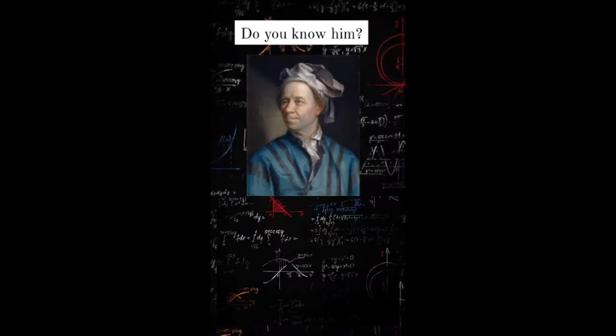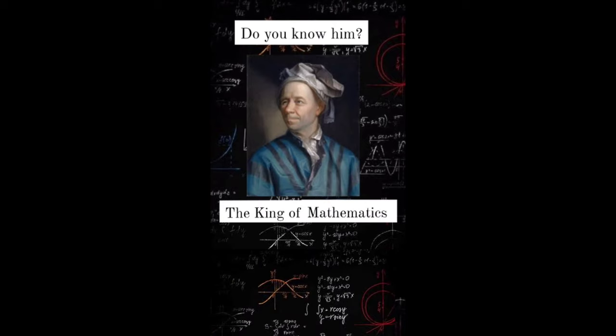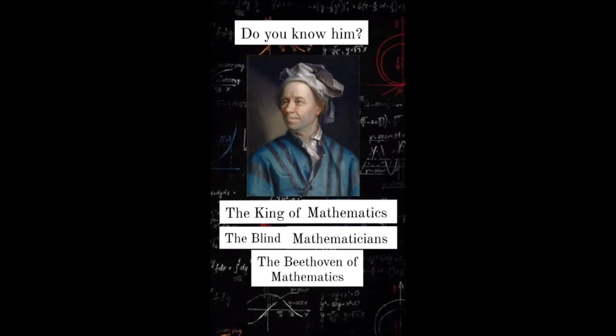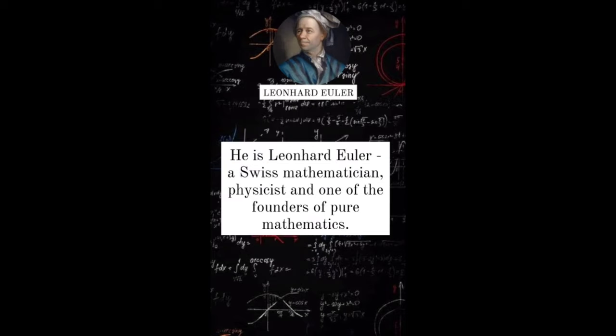Do you know him? He is known as the King of Mathematics, the Blind Mathematician, and the Beethoven of Mathematics. He is Leonhard Euler, a Swiss mathematician, physicist, and one of the founders of pure mathematics.